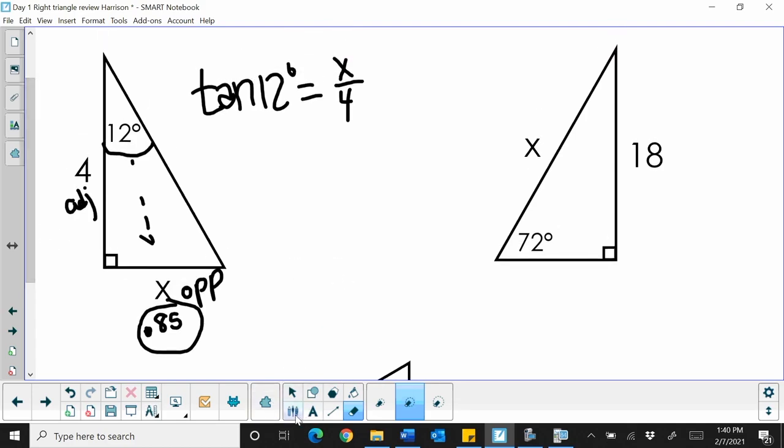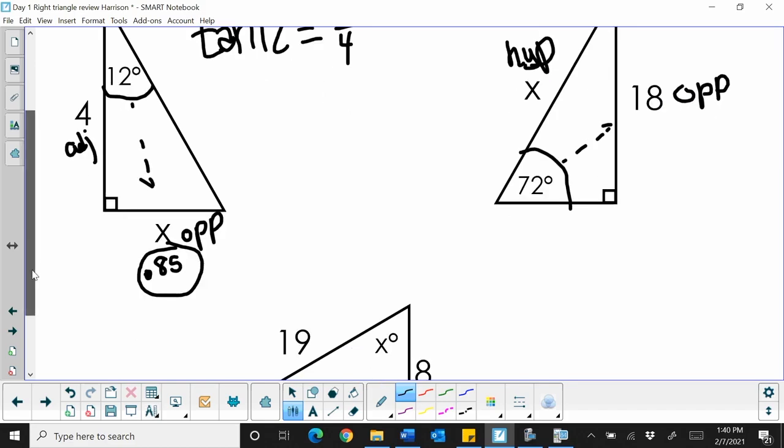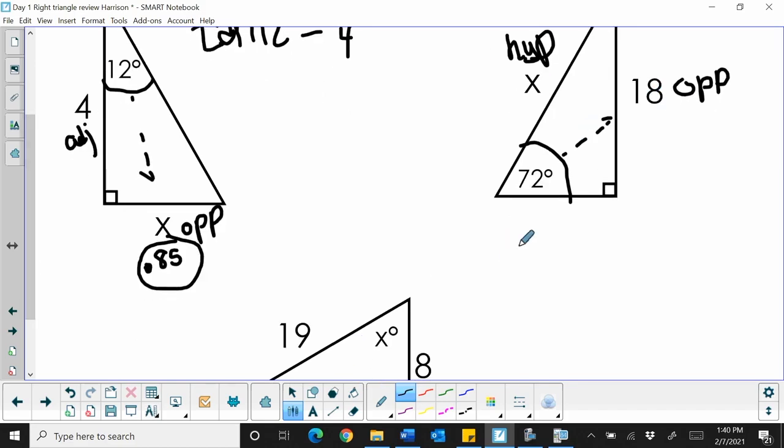Okay, let's look at the second one. Okay, we have an angle that's 72. This side is our opposite. We're trying to solve for the hypotenuse. Which trig function do you use? Opposite hypotenuse, that is sine. So the sine of 72 is equal to the opposite, which is 18, over the hypotenuse, which is x.